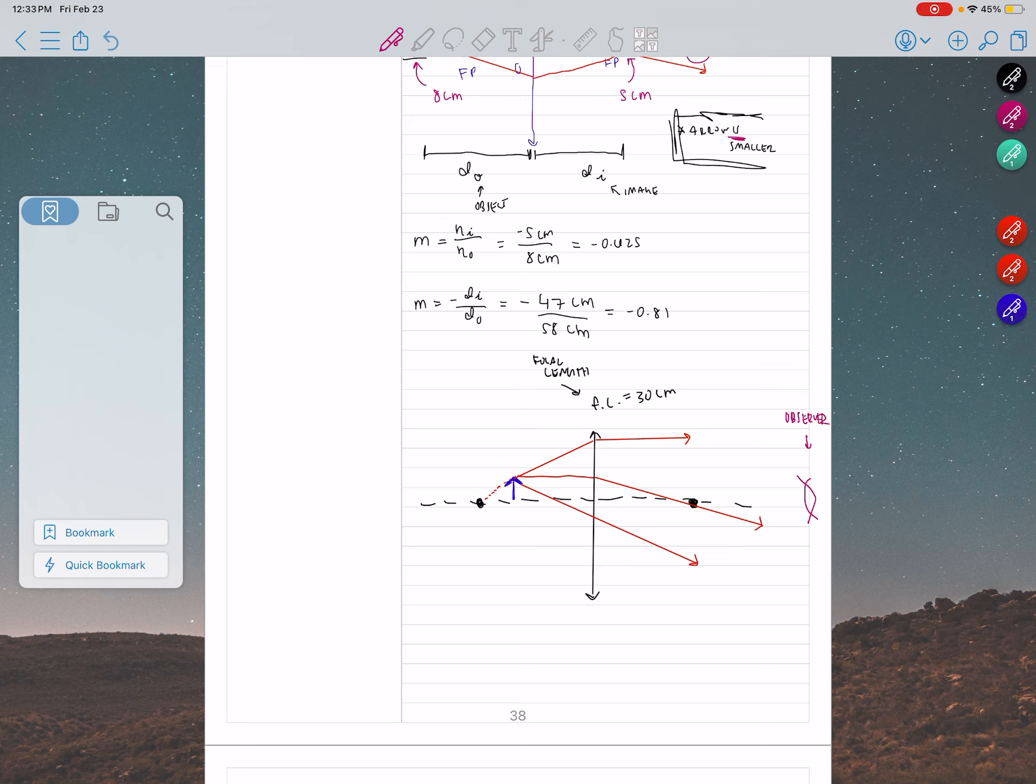So this one will come like this, this one, oh, this one, there you go, and this one. Okay, so they intersect somewhere around there. Okay, so that's an image.